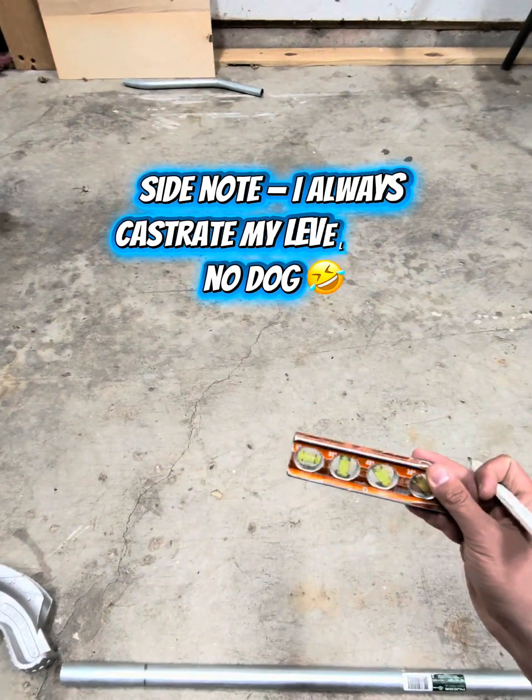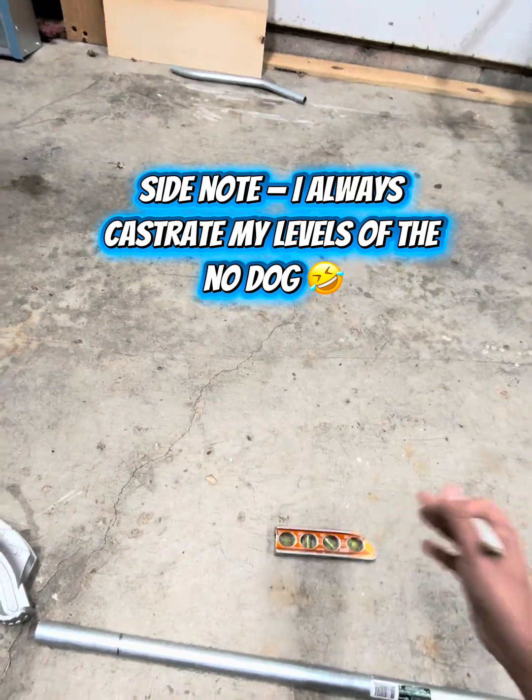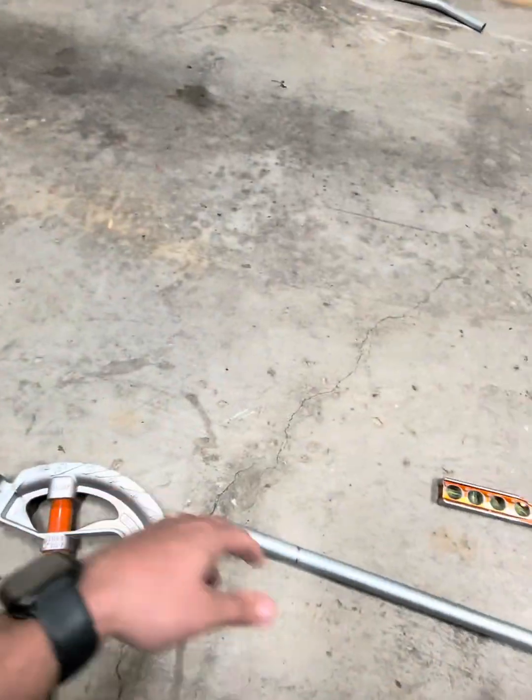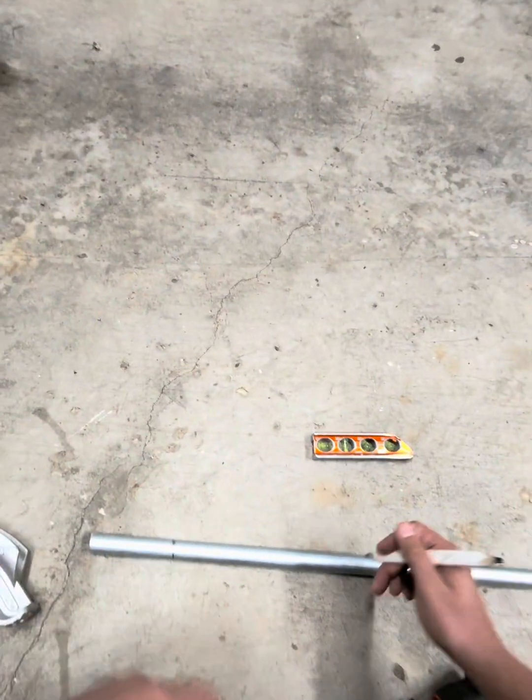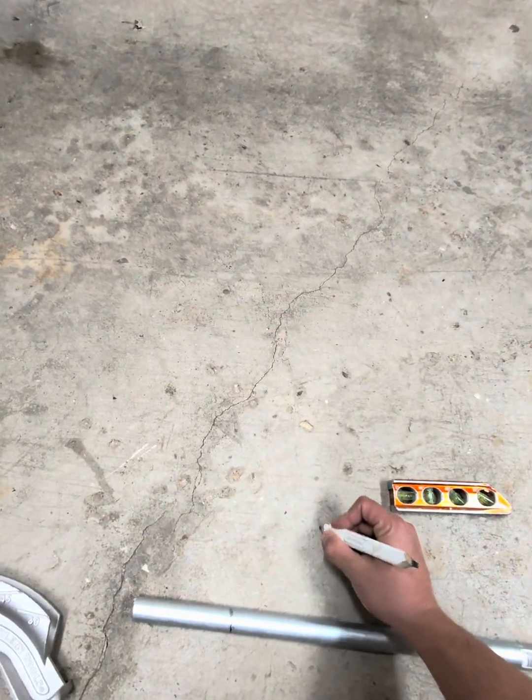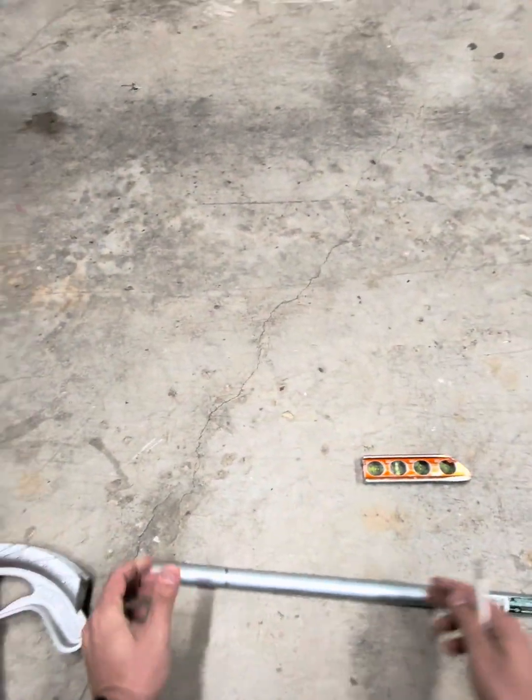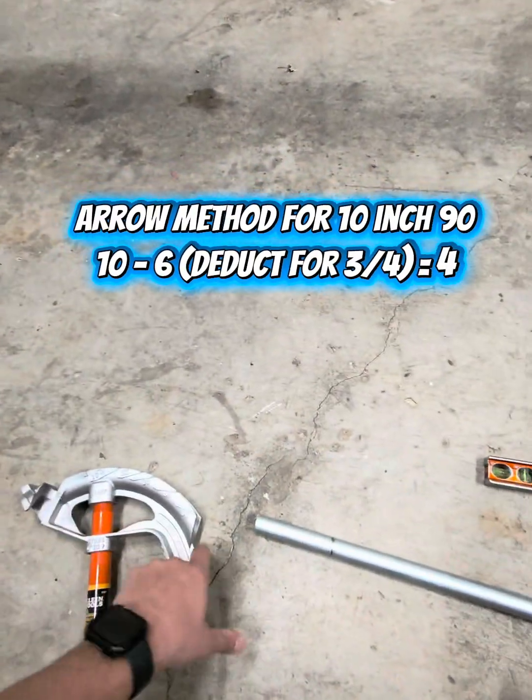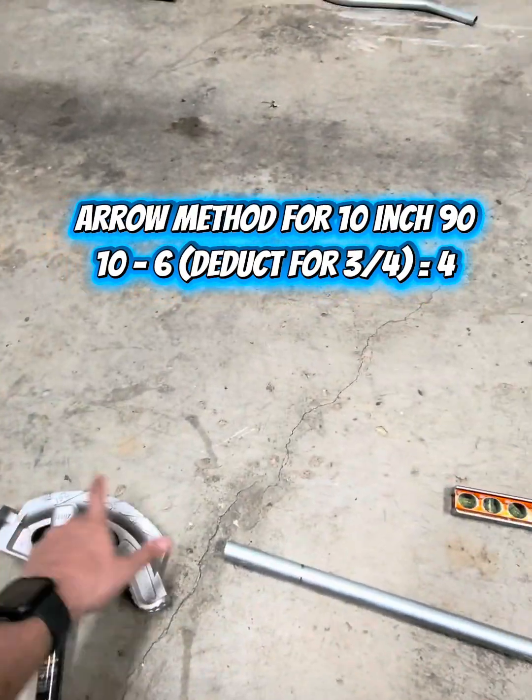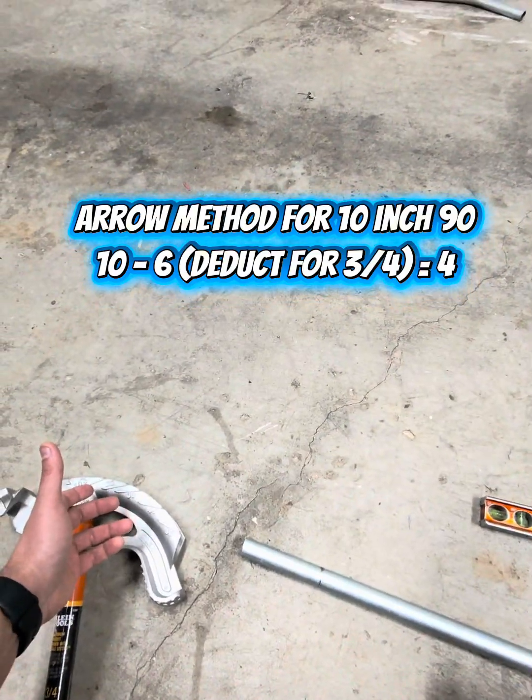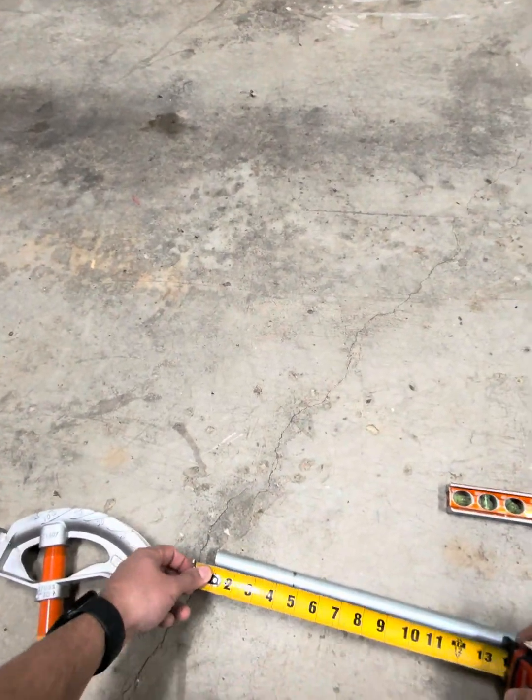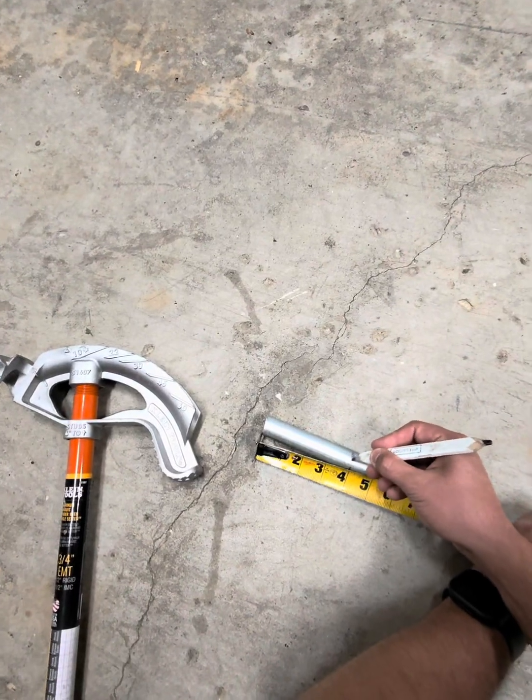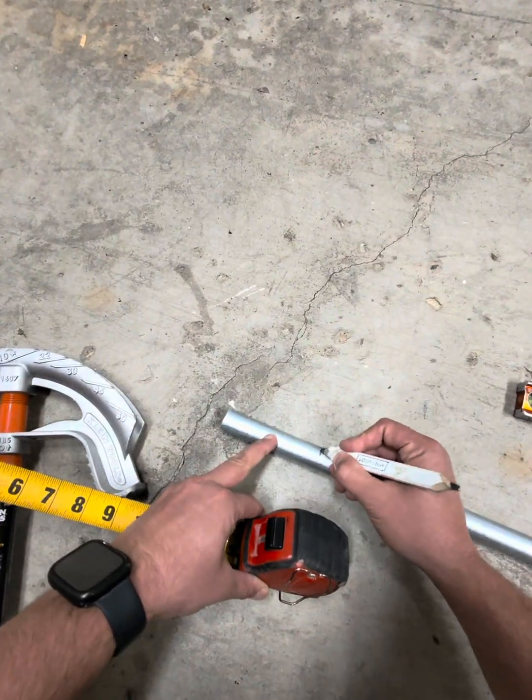Also, shout out to my castrated Klein level. I cut the nub off all mine. Anyways, the standard arrow method is going to be just as it sounds. So let's write it out on my concrete. Let's say I need a 10 inch 90. Our standard deduct on three-quarter EMT conduit in the hand bender is going to be six inches. So if I need a 10 inch 90, the standard deduct six inches, our mark would be at four inches, which I already have marked out.